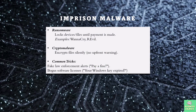Imagine turning on your computer and seeing a screen that says: 'All your files are locked — pay $500 in Bitcoin to get them back.' That's ransomware — malware that literally imprisons your data until you pay up. Some versions even pretend to be the FBI accusing you of illegal activities, while others show fake software license warnings. Then there is crypto malware, a sneakier cousin — it encrypts your files without showing a ransom note upfront, so you might not realize you're infected until it's too late. In 2017, the WannaCry ransomware hit hospitals, delaying surgeries because patient records were locked.